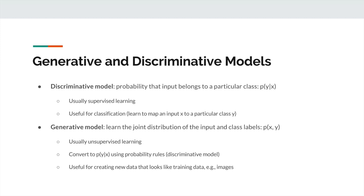If you have a probability distribution over the input space — whether that be images or any other kind of input — then you can actually use it to generate new inputs. This is kind of what GANs are trying to do: learn this generative model's joint distribution of X and Y. For GANs specifically, you don't need to provide class labels. There are some flavors like the Auxiliary Classifier GAN, or AC-GAN, that do accept class labels. But for general GANs, you don't necessarily need ground truth labels, so it's more like unsupervised learning where you model just P of X.